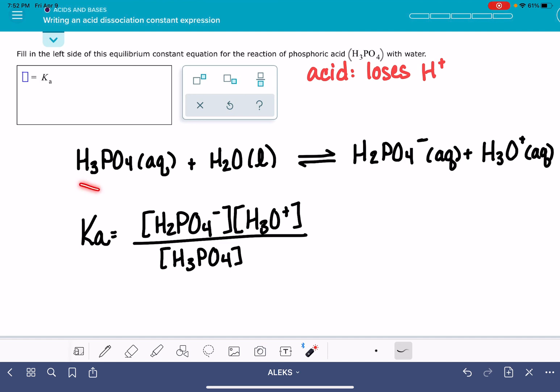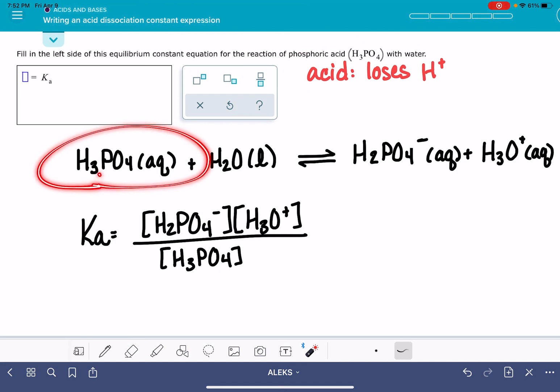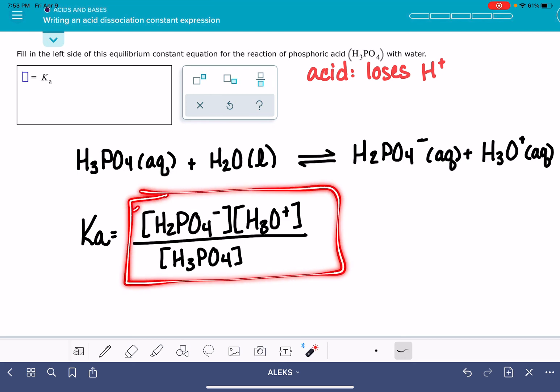One last thing I want to say is that for your acid, no matter how many hydrogen atoms are in the formula, when you write this equation, you're only going to be losing one of those hydrogen atoms. So as you saw here, even though I had three hydrogen atoms to start with, I only took one of those hydrogen atoms away from the molecule. And that is always going to be the case. So here is the answer to this problem. What an excellent problem.